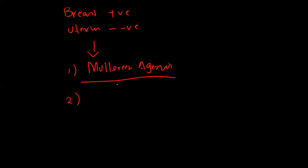Another condition to keep in mind when the uterus is absent is androgen insensitivity syndrome. In androgen insensitivity syndrome, the patient has the genetic makeup of a male but external sex characteristics of a female. The patient does not have a uterus; in fact, they have undescended testes. They are typically raised as female and may have a gender identity disorder. Any patient with an absent uterus should always raise suspicion for androgen insensitivity syndrome.